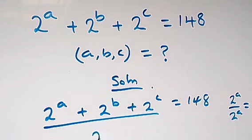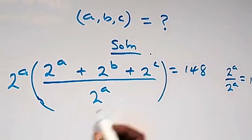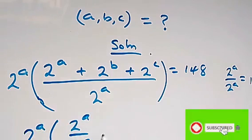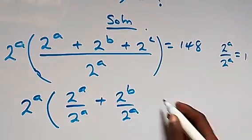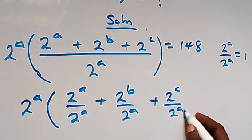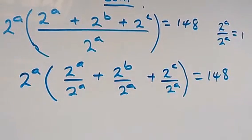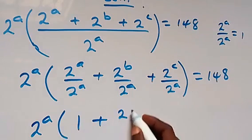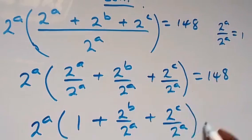So we divide everything by 2 raised to power a and also multiply it by 2 raised to power a. We can separate this and it becomes 2 raised to power a into bracket: 2 raised to power a over 2 raised to power a, then plus 2 raised to power b over 2 raised to power a, then plus 2 raised to power c over 2 raised to power a, equals to 148. This cancels out and we have 1, so we have 2 raised to power a into bracket 1 plus 2 raised to power b over 2 raised to power a plus 2 raised to power c over 2 raised to power a, equals to 148.